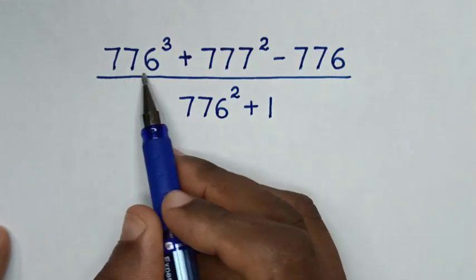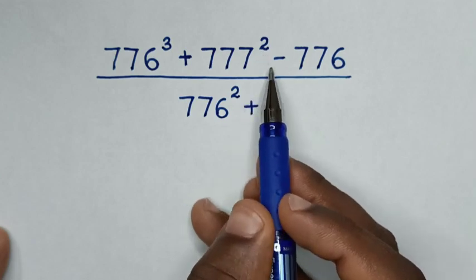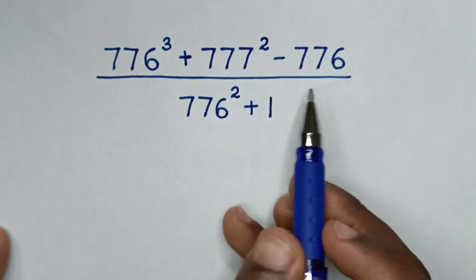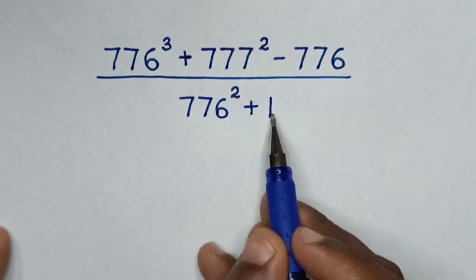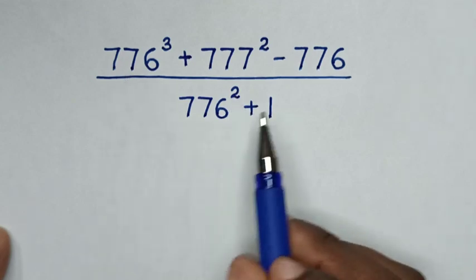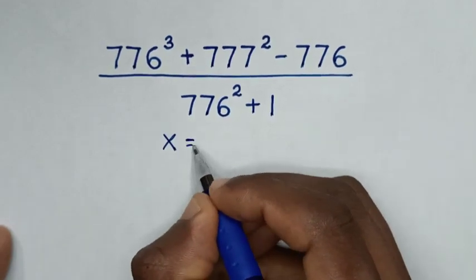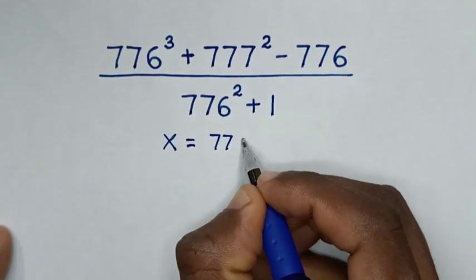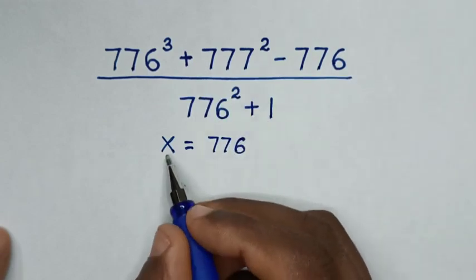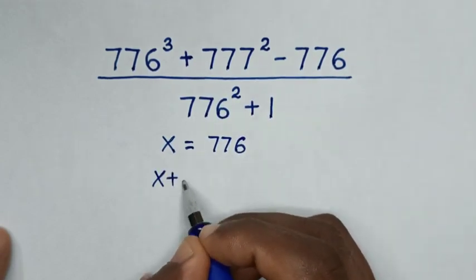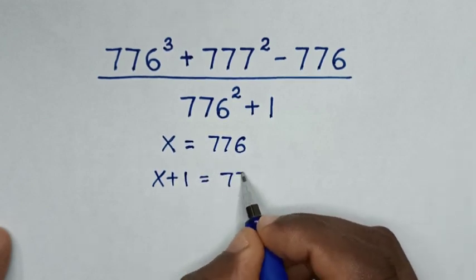Hello. How to solve 776 cubed plus 777 squared minus 776 over 776 squared plus 1. From here we let x equal to 776. Then 777 we let as x plus 1, which is equal to 776 plus 1, which is 777.